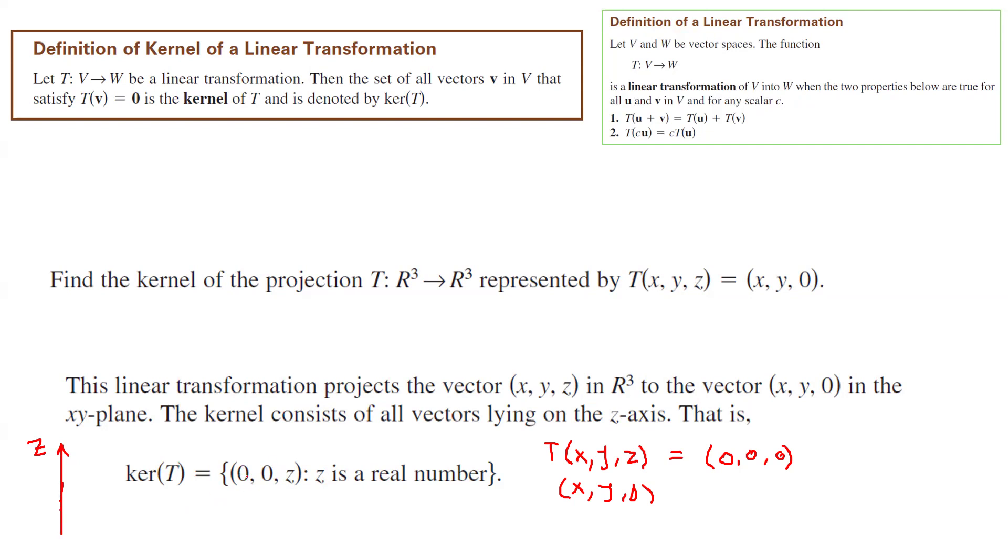Every entry x and y in the z-axis are equal to 0, and then z, it might be 0, non-zero, square root, a half, a third, any fraction. So the description or visualization of kernel of T is the z-axis itself.